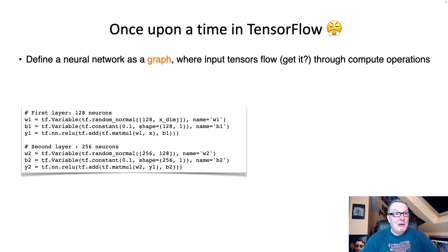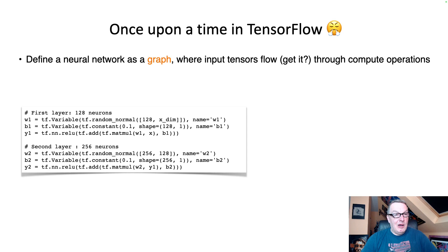Here's a really simple example — that's how a lot of us got started a few years ago. You define TensorFlow variables for weights and biases, define multiplication and activation operations, and start combining this step by step, layer by layer, to let your input tensors flow through the model. Here we see a first layer where we multiply the input tensor by weights — 128 neurons — we add the biases, then apply the ReLU activation function. Then we do that again for a second layer with 256 neurons, etc. You would just define those layers one by one.